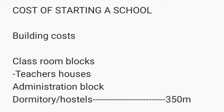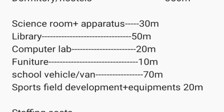A science room with apparatus costs roughly 30 million — this applies mainly to secondary schools. A library will cost around 50 million and is important for both secondary and primary schools.